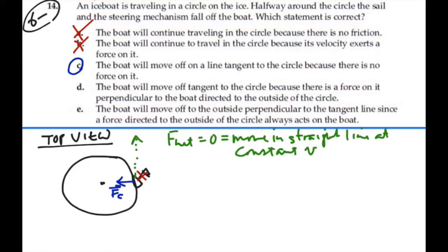D, the boat will move off in a tangent to the circle because there is a force on it perpendicular to the boat directed to the outside of the circle. No, no force on it at all because the sail is gone.